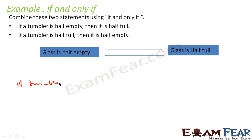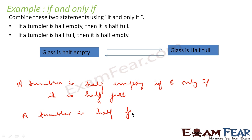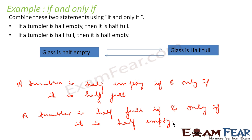So the statement is: a tumbler is half empty if and only if it is half full. Or I can also say: a tumbler is half full if and only if it is half empty. Both are the same statement. That's how we have combined these two statements using 'if and only if.'